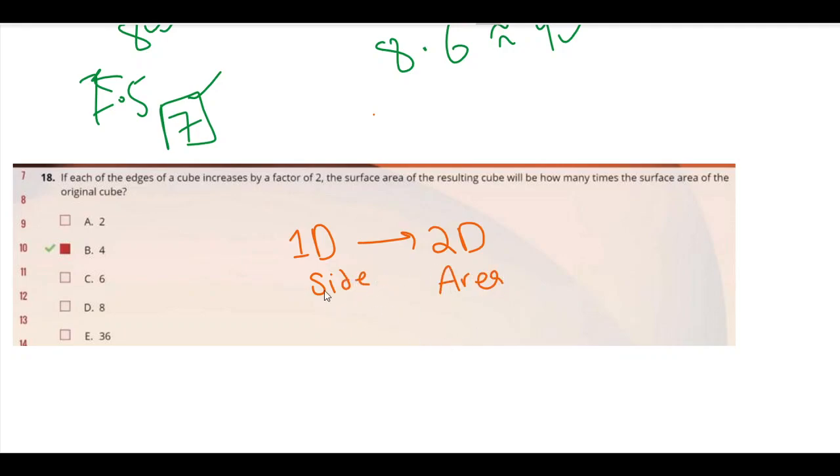So if you're basically multiplying a factor of two over here, you need to square it up. And this is going to be like two times two, which is going to be like four. So yeah, four.